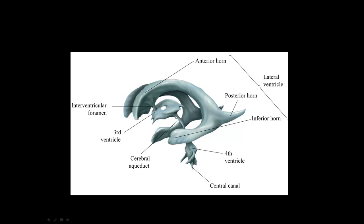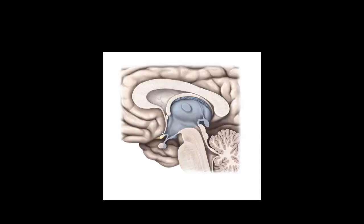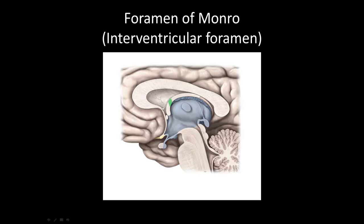From the third ventricle, we go into the fourth ventricle via the cerebral aqueduct. Looking at these areas in section view: here is the septum pellucidum, and the lateral ventricle is just lateral to it. From the lateral ventricle we flow into the third ventricle — the space outlined here — via the foramen of Monroe, or interventricular foramen, just lateral to the highlighted green area.